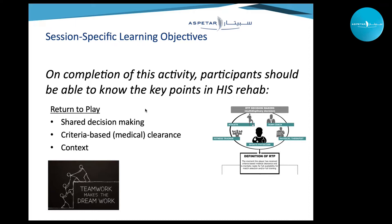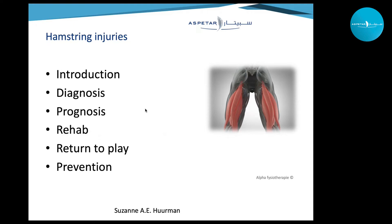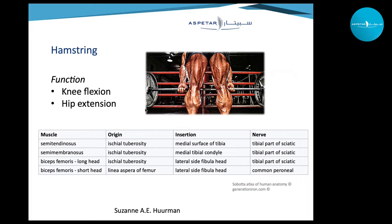We'll start with an introduction on hamstring anatomy. The hamstrings are the knee flexors and hip extensors — four muscles, most of them originating at the ischial tuberosity, going to either the medial part of the tibia or the lateral side at the fibula head.